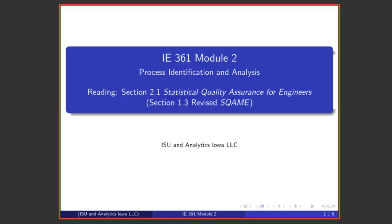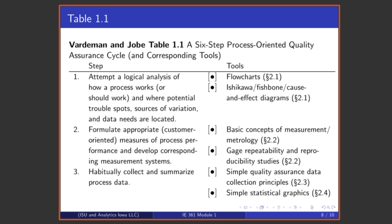Welcome. This is the second in a series of short lectures on the subjects of statistical quality assurance and statistical process improvement, structured around a six-step quality assurance cycle laid out in this table from the textbook of Vardaman and Jobe.